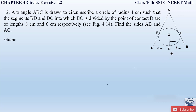This question is a little bit lengthy but solving it is quite easy if you understand it step by step. At point D there is a point of contact on side BC. Similarly, on side AB there is a point of contact E between the triangle and the circle, and point of contact F is on side AC.